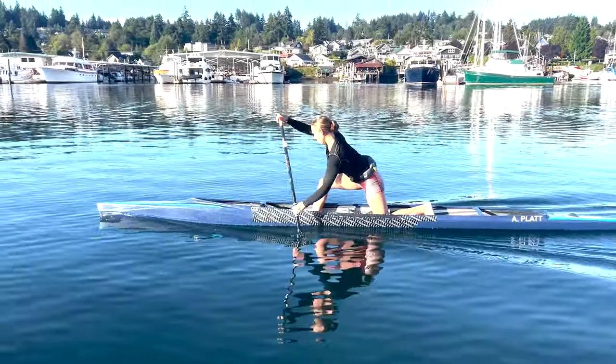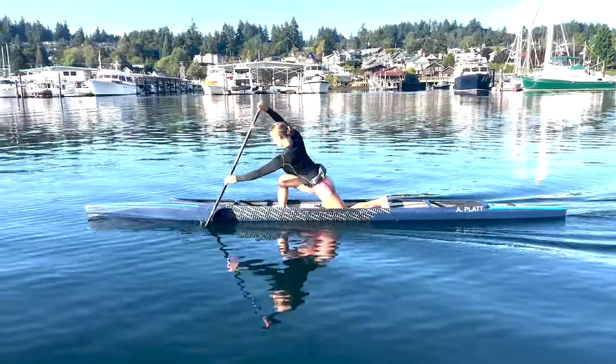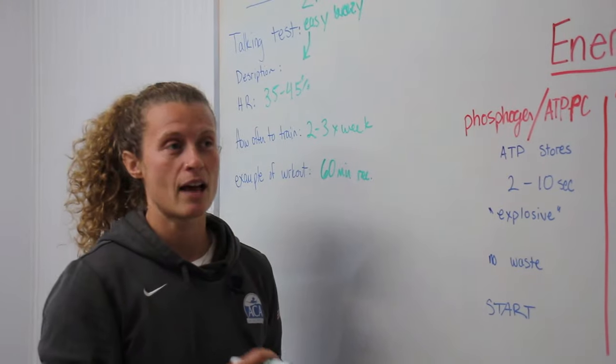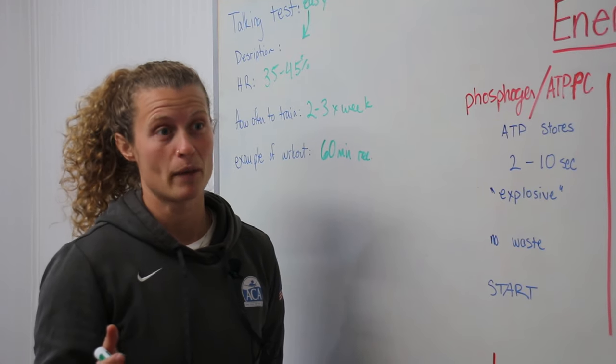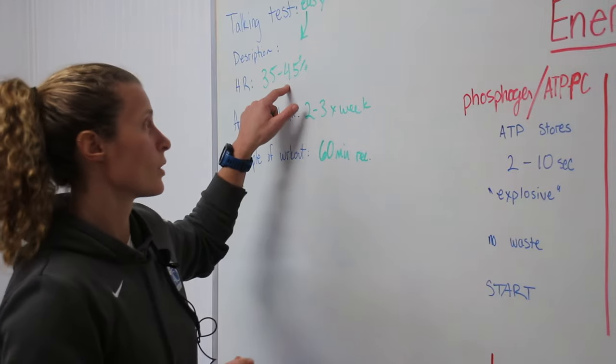Your heart rate is going to be 35 to 45 percent of your max. Just so you guys know, the general way to find your maximum heart rate is 220 minus your age. Super general way to figure it out. Every athlete is going to be a little different. And the more fit you are, the higher your max heart rate might be able to be. So just so you know that, as I mentioned the percentage of your heart rate.